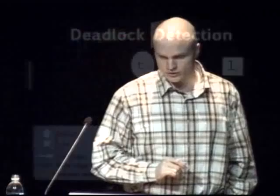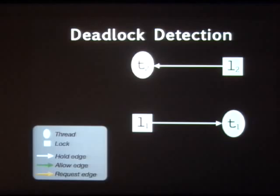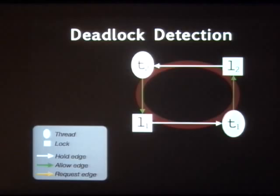Deadlock detection — the second thing DEMUNIX does — is no rocket science. We use a resource allocation graph with two kinds of nodes: thread nodes and lock nodes. I'll walk you through the HawkNL bug, which is the simplest way in which a program can deadlock. T1 requests and acquires lock L1. T2 requests and acquires its lock. Then T2 blocks waiting for L1, and T1 blocks waiting for L2. We have a cycle — the textbook way of detecting deadlocks.